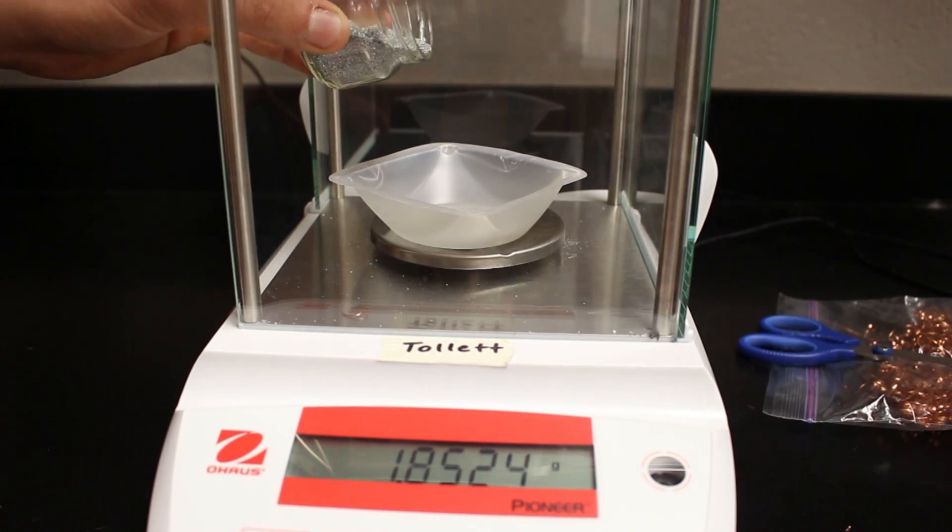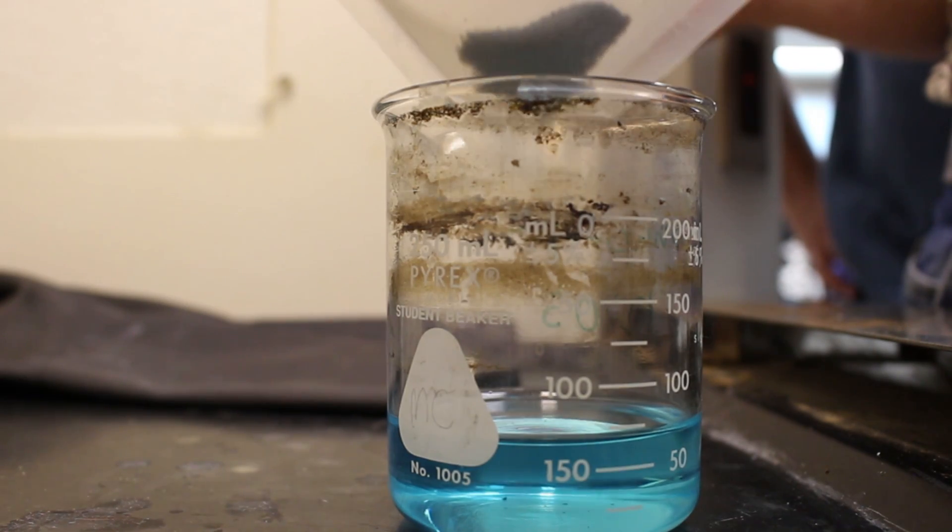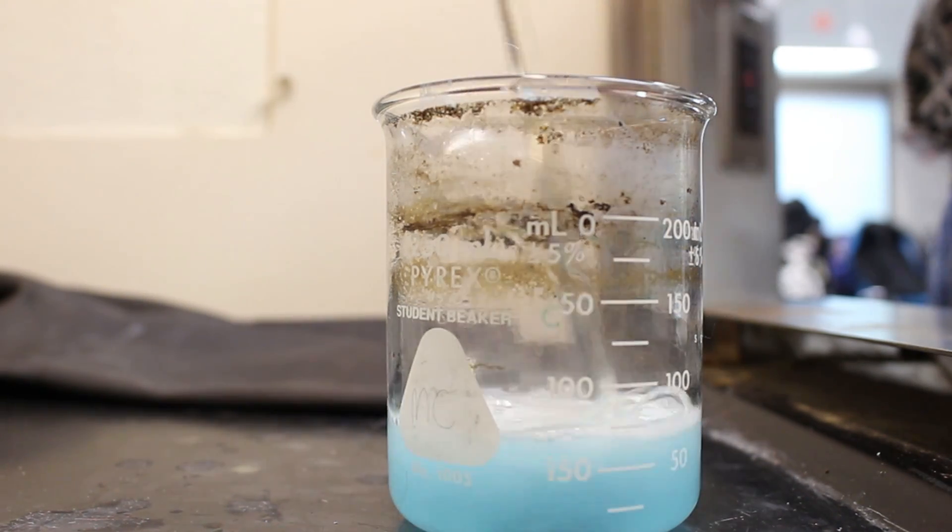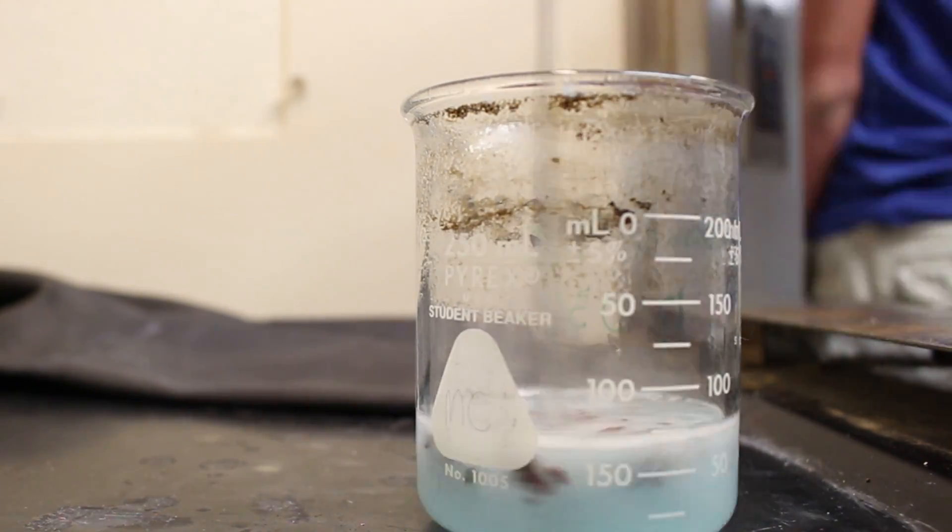We massed approximately 2 grams of 30 mesh zinc on the balance and added it to our solution of cupric ions. The zinc slowly reduced the cupric ions to solid copper and reacted with the sulfuric acid to produce hydrogen gas.